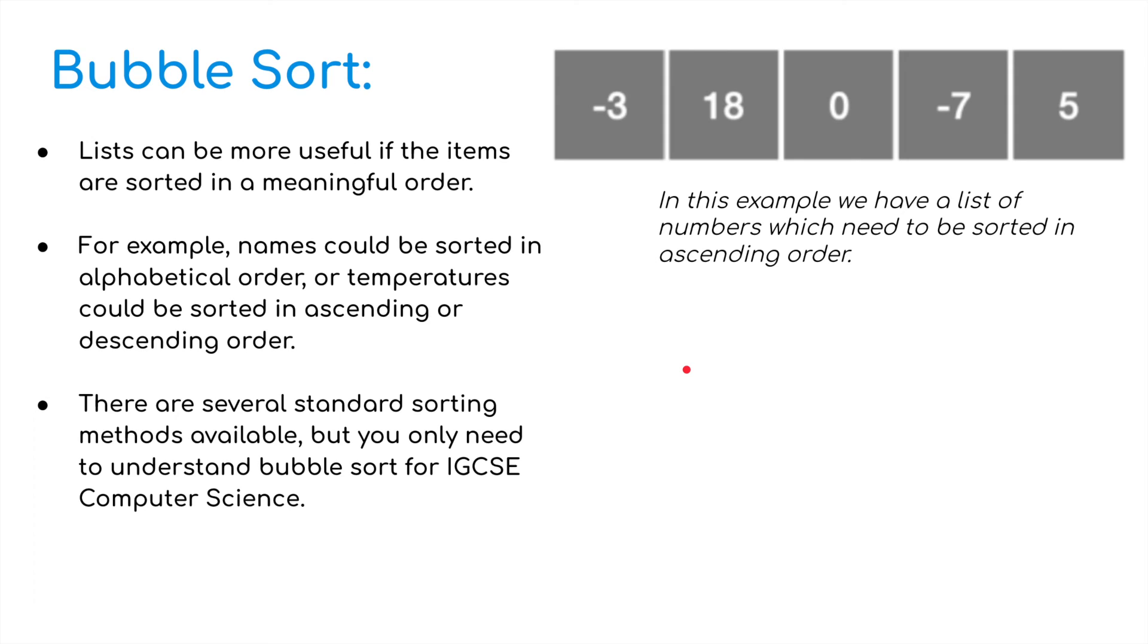And finally, we've got bubble sort. Now, bubble sort, I'm not going to do as Python code. There are many, many different types of sorting in terms of using a list. If we've got a list of numbers particularly, a list of information and we want to sort them into some kind of ascending or descending order. For example, names could be sorted in alphabetical order or temperatures could be sorted in ascending or descending order. As I've just said, there are several standard sorting methods available, but you only need to understand bubble sort for IGCSE. So what I'm going to do with this video, because we've not covered it at all so far, is show you what exactly bubble sort is.